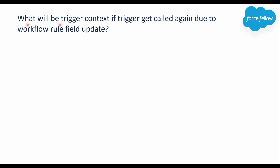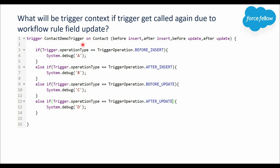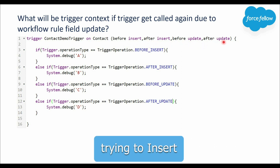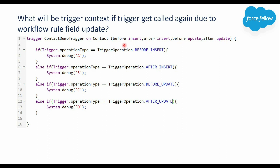Next question: what will be the trigger context if a trigger gets called again due to a workflow rule field update? As discussed, system validations and triggers will run again if a field is updated via a workflow rule. If we are inserting a new Contact, the trigger first fires in before-insert and after-insert context. When the workflow rule updates a field, the trigger fires again — but this time in update context, meaning before-update and after-update.